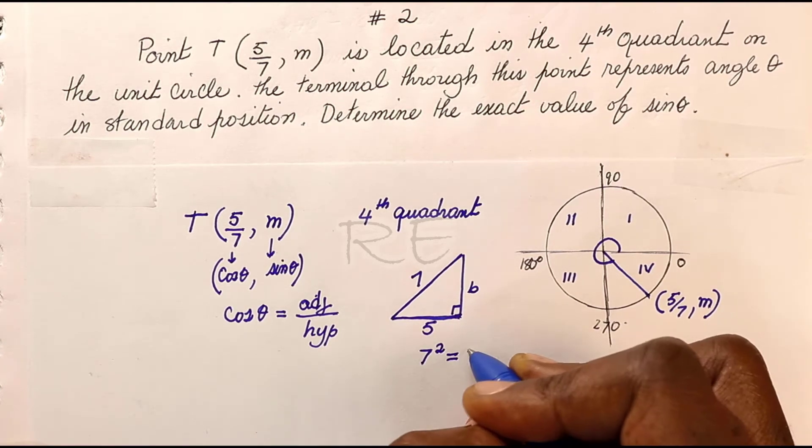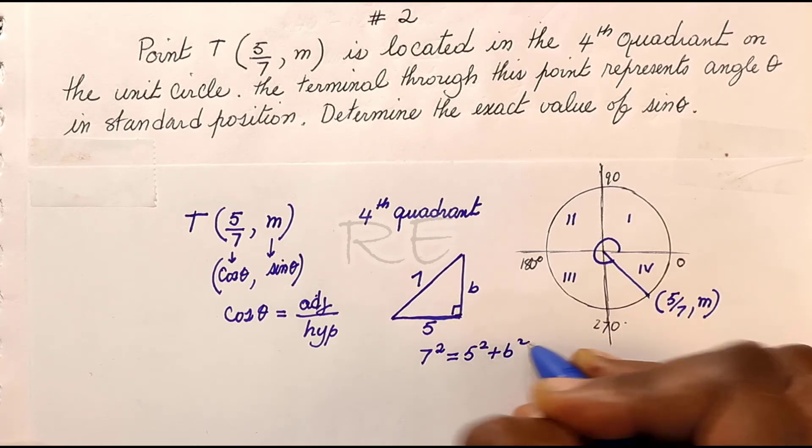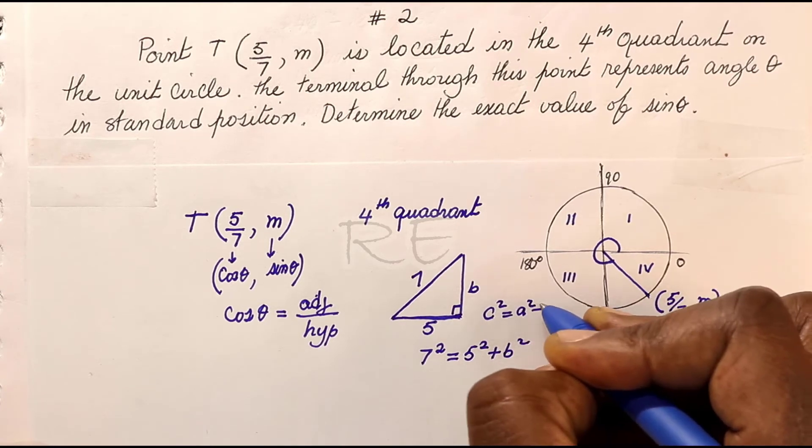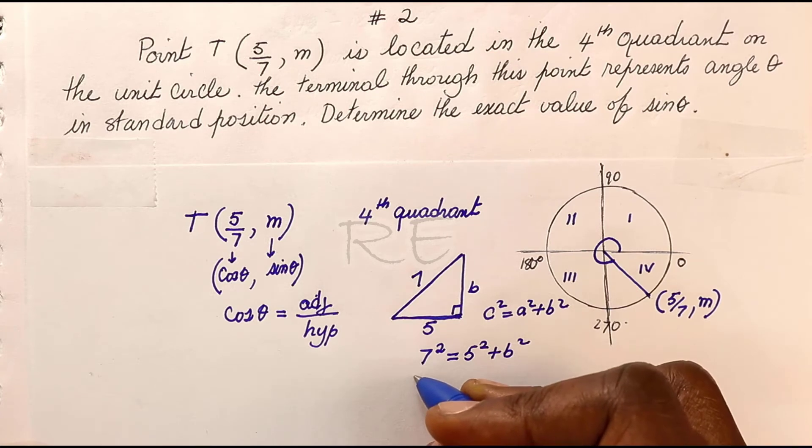C squared is equal to A squared plus B squared - Pythagorean theorem. Therefore, 7 squared is equal to 5 squared plus B squared.